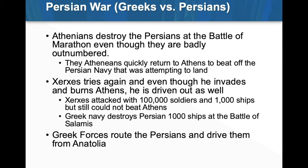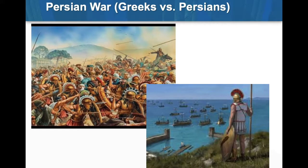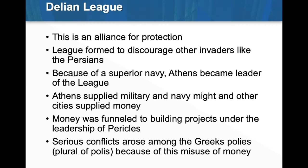So this is a good day for the Greeks and a bad day for the Persians. We see a couple of pictures — one is a land battle, and then a soldier overlooking ships in the ocean. Just some artistic representation of the Persian War. Following this, the Greeks decide to develop a league called the Delian League. The Delian League is an alliance of the city-states and the colonies for protection, formed to discourage other invaders like the Persians. Now they're making a league of a bunch of Greek city-states to beat off any invaders.